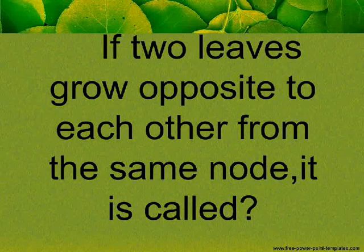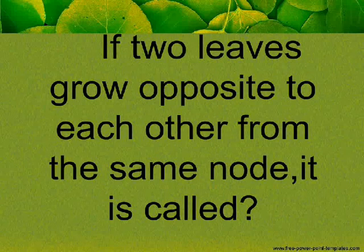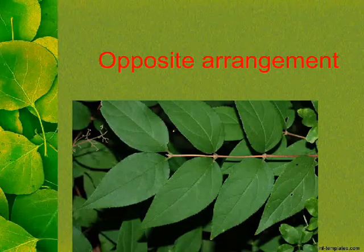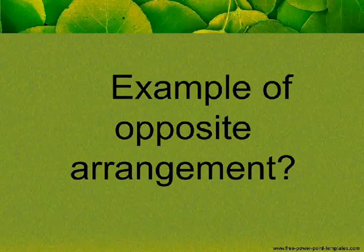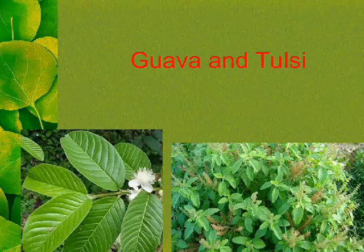If two leaves grow opposite to each other from the same node, it is called Opposite Arrangement. Examples of Opposite Arrangement include guava and tulsi.